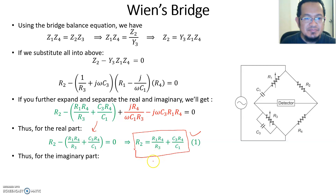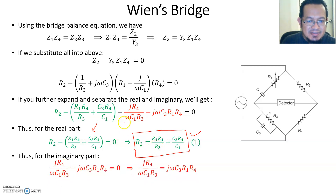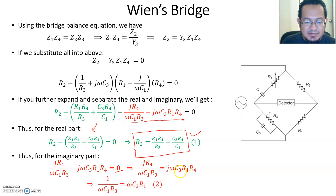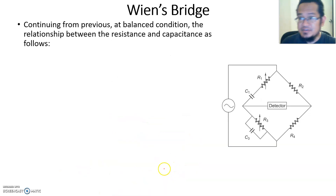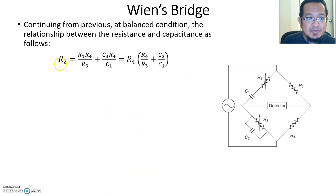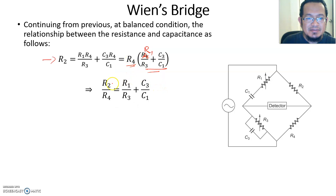That is the first relationship under balance condition. For the imaginary part, setting that expression to zero and simplifying — canceling j, canceling R4 — gives the second equation relating C1, R3, C3, R1, and frequency. Continuing from the previous equation, factoring out R4, the simplified result involves R1 and R2, where bringing R4 down gives R1/R3 + C3/C1 as the simplified equation.